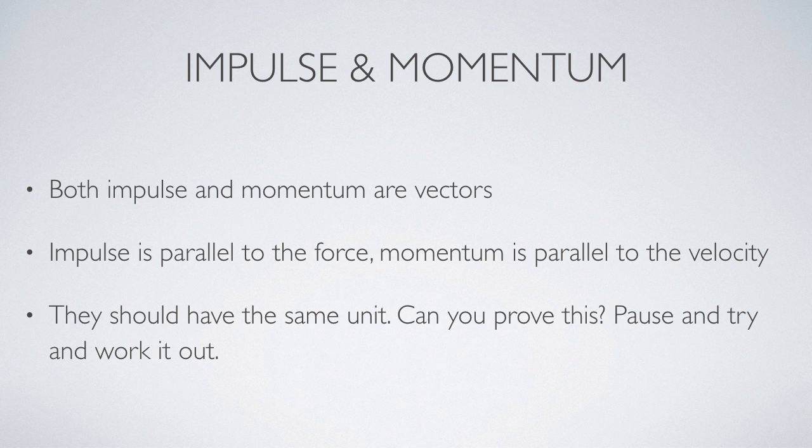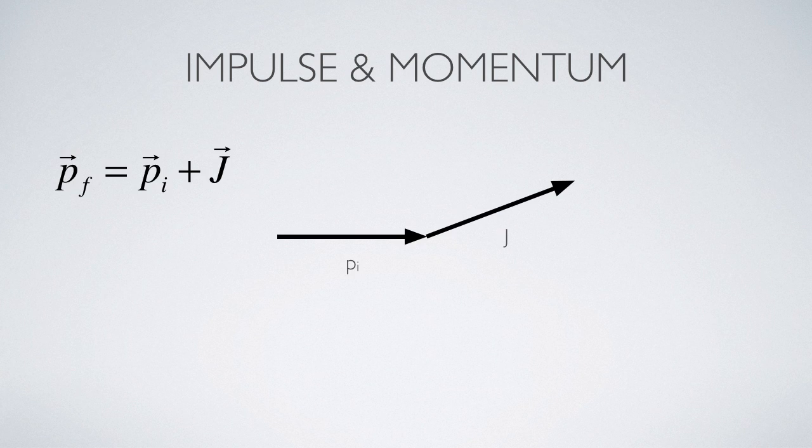If you think about momentum, it appears to have units of kilograms times meters per second, mass times velocity. But since change in momentum is equivalent to impulse, it really should have units of newtons times seconds. I'll leave that as an exercise for you to show that those two units are actually equivalent. Pause the video and work on that for a few minutes. Hopefully you were able to show that impulse and momentum have the same unit.